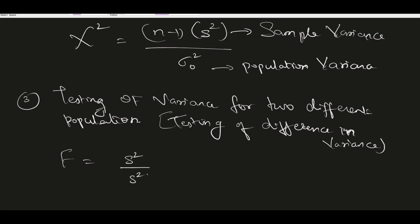The F-test is equal to variance divided by variance — specifically, the bigger variance divided by the smaller variance. Since the bigger number is in the numerator, the ratio will never be negative. This is the F-test we use when checking variances of two different populations.